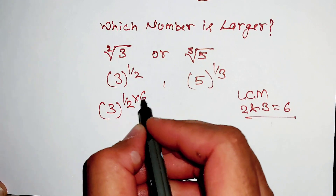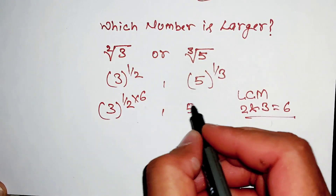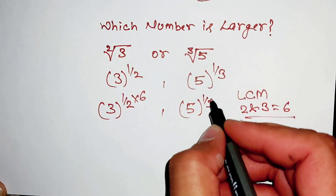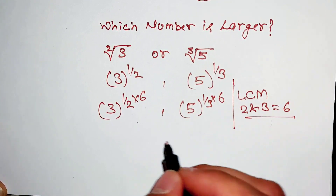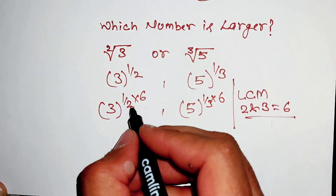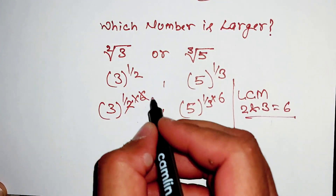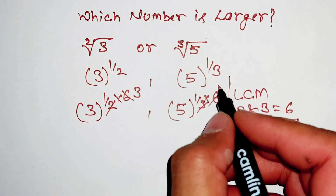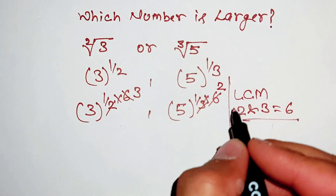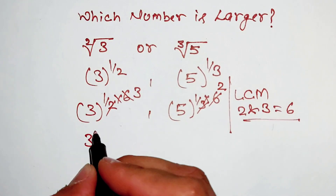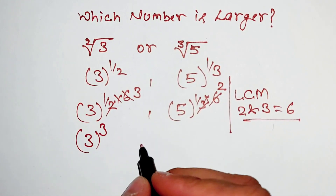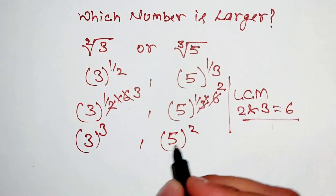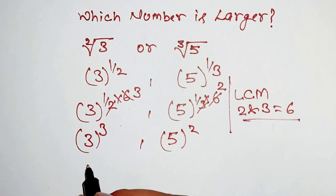Here, 6 divided by 2 gives 3, and 6 divided by 3 gives 2. So we get 3 power 3 and 5 power 2.